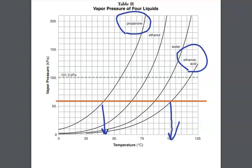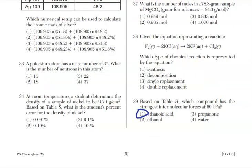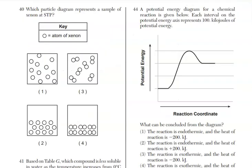And that would go no matter what the temperature is when we're comparing or the vapor pressures. Propanone is your weakest intermolecular forces. Ethanoic acid is your strongest. And then ethanol and water are in between. That makes the answer for question 39, choice one.